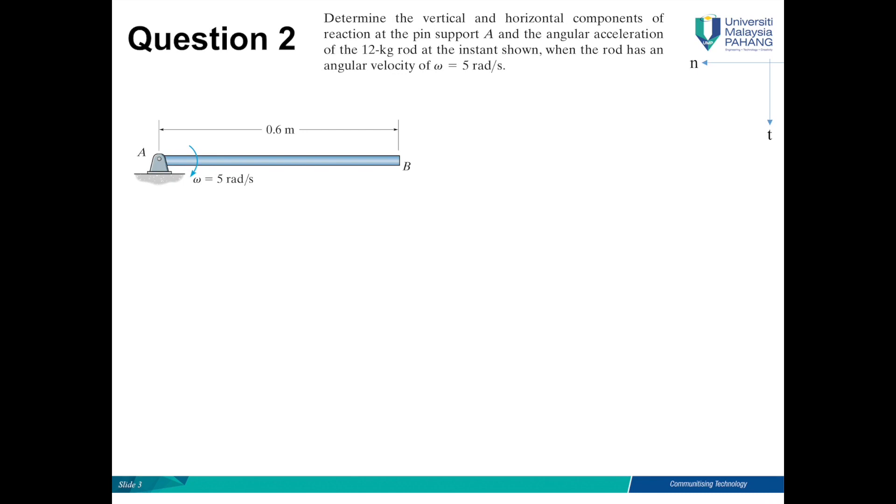When the rod has an angular velocity of omega equals 5 rad per second. Now the angular velocity is given. Previously in the previous question, when there was an initial motion, it meant omega equals zero. Now the omega has a value.